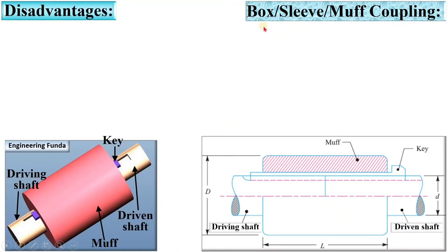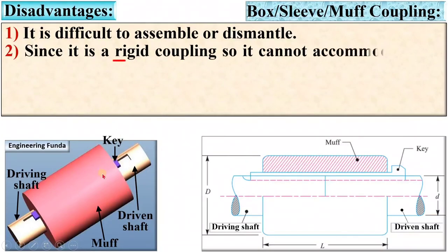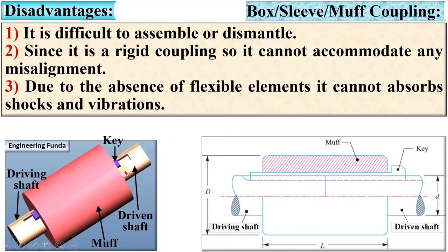Disadvantages of the box coupling: It is difficult to assemble or dismantle. Since it is a rigid coupling, it cannot accommodate any misalignment between the shafts. Due to the absence of flexible elements, it cannot absorb shocks and vibrations as in the case of flexible coupling.